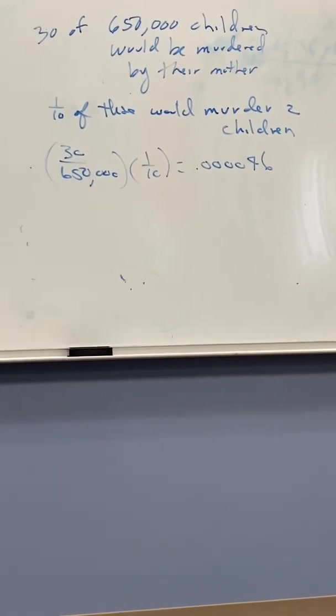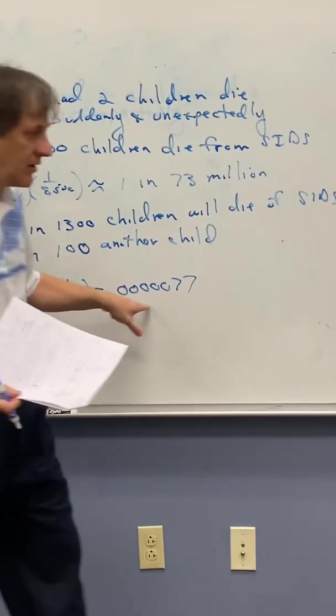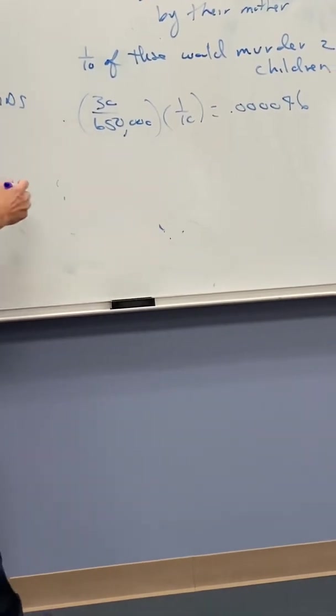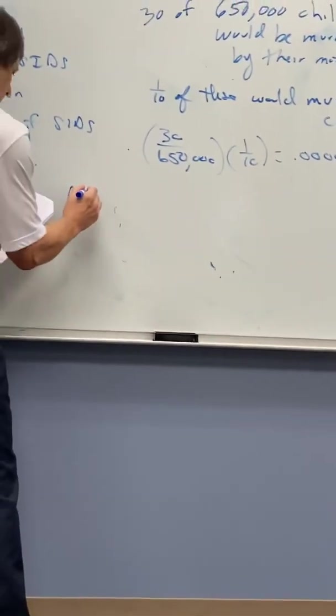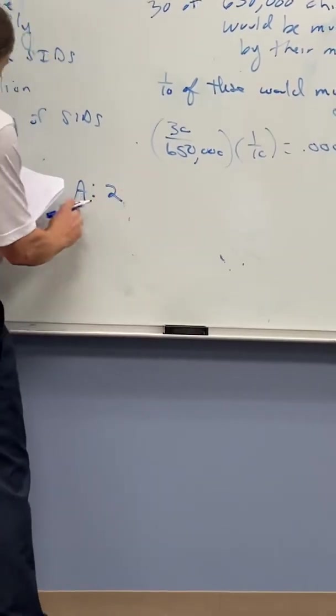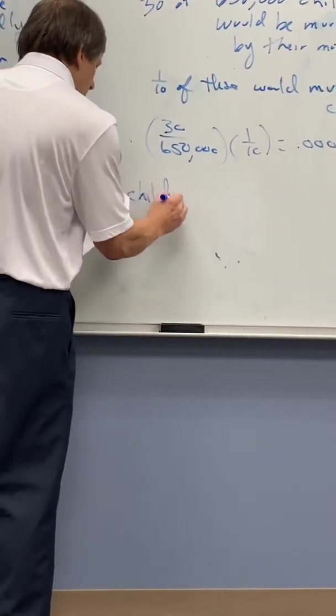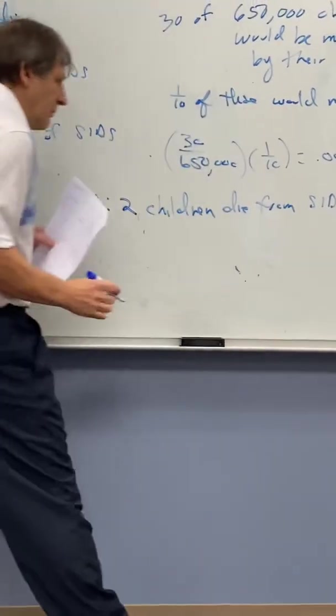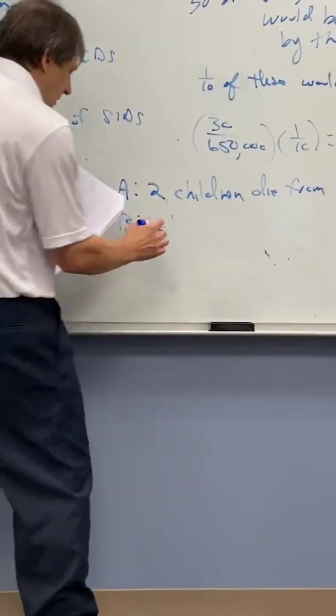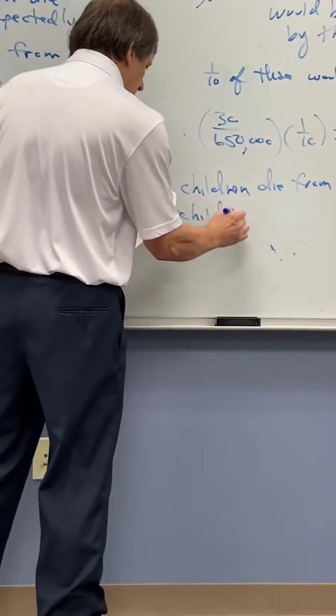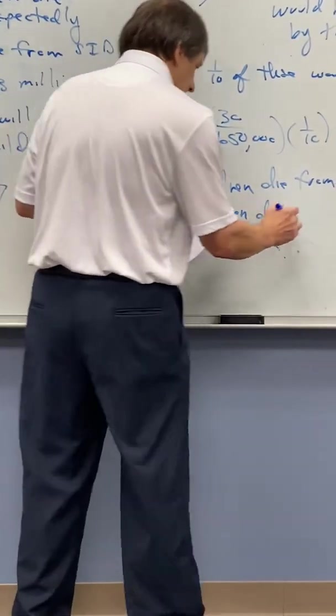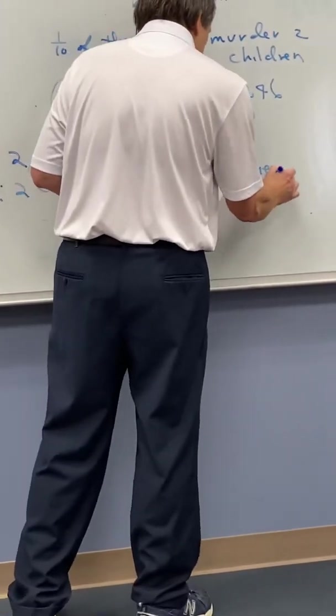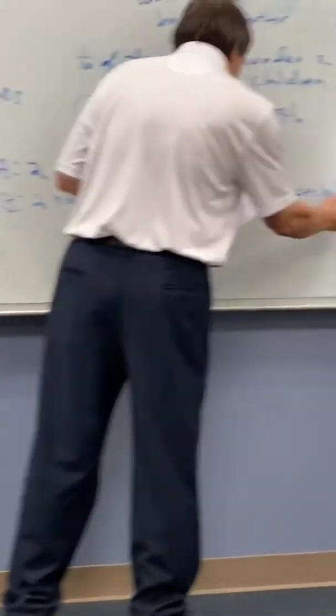So the defense is going to say, hey, you have a rare situation here, but I have a rare situation here. We're going to use Bayes' Theorem to kind of sort this out. We're going to label A as two children die from SIDS. That's, of course, what the mother claimed. B is going to be two children die suddenly and unexpectedly.